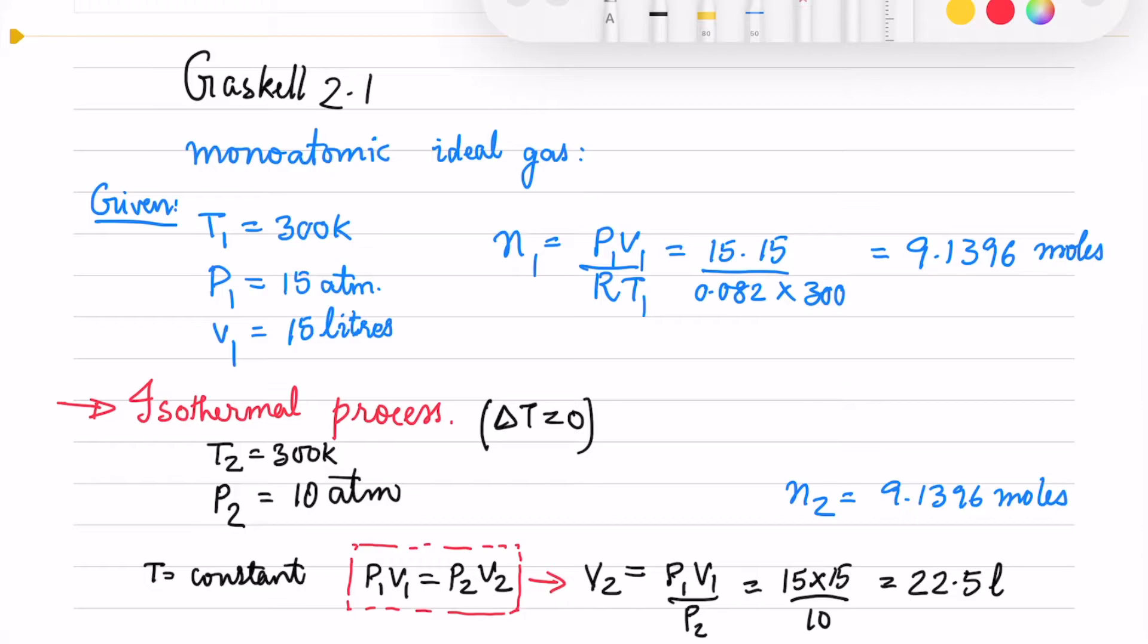Here is the solution. We have the temperature, pressure, and volume. From this we calculate N1 using P1V1/RT1 and get 9.316 moles. I use R = 0.08206 liter atmospheres per mole Kelvin because the pressure and volume are in atmospheres and liters.